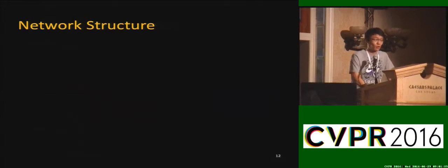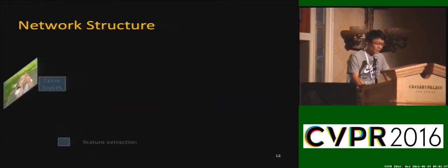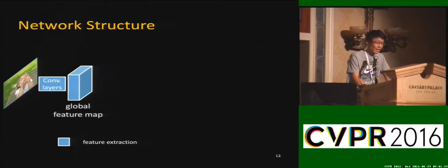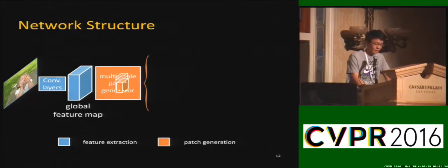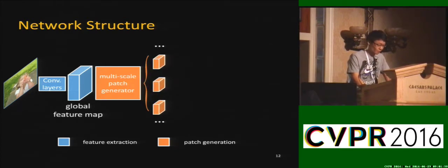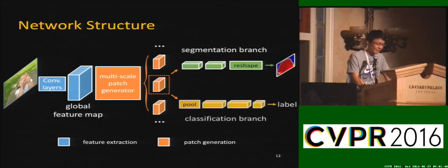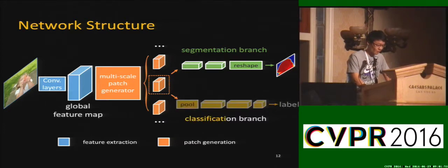Now I describe the details of our network. The input image first goes through convolutional layers to generate the global feature map. A multi-scale patch generator operates on the global feature map to crop feature grids for different patches. The following segmentation and classification branches operate on the cropped feature grids. In the segmentation branch, we follow DeepMask and utilize fully connected layers to connect feature grids and masks. In the classification branch, we follow the standard design with three fully connected layers.